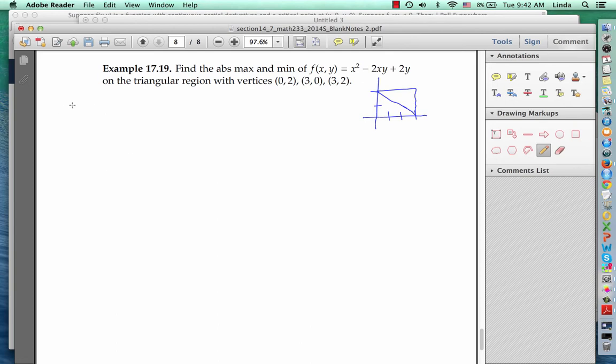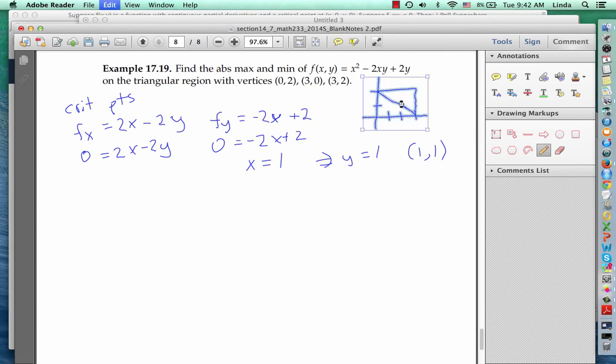To look for extreme values on the interior, let's find the critical points. So f sub x is 2x minus 2y, and f sub y is minus 2x plus 2. If we set both of those to 0, we get immediately from the second equation that x has to equal 1. And therefore from the first equation, we know that y has to equal 1 also. So our critical point here is 1, 1, but notice that that point is not inside the region that we're interested in. So we don't have to worry about it.